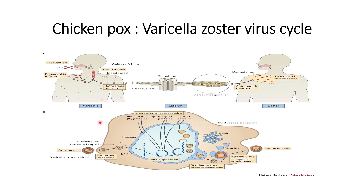Let us now understand in detail how this virus can hijack or take over the whole cell machinery in order to replicate. VZV is a coated virus, so when it goes inside the cell membrane, fusion and uncoating occur — the top layer gets removed — and then the DNA moves